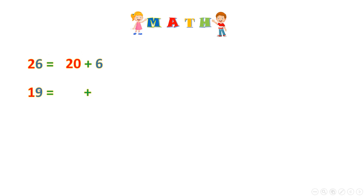19 is made of 1 ten and 9 ones. 1 ten and 9 ones — 1 ten is 10, and 9. So it's 10 plus 9. Now if we have 57 — 57 is what plus what? 57 is made of 50: 5 tens. 50 and 7.